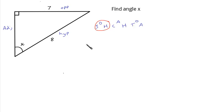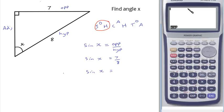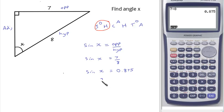Writing it out: the sine of X — the angle we're trying to find — equals the opposite over the hypotenuse. Putting the numbers in, sine of X equals 7 divided by 8. Using the calculator, 7 divided by 8 gives 0.875. So the sine of X is 0.875. We've found the sine of our angle; we now need to find the angle itself. So X will be the inverse sine of 0.875.